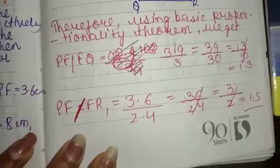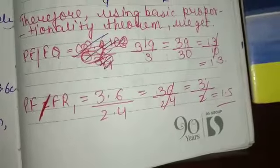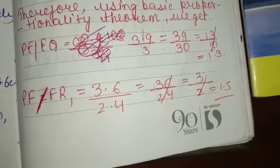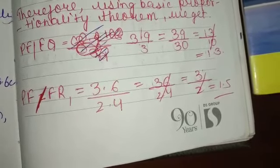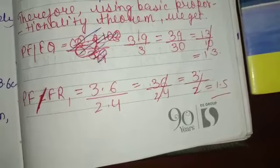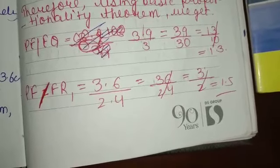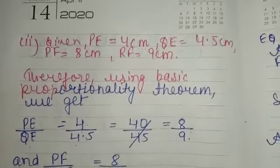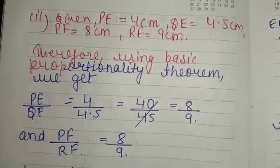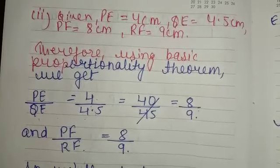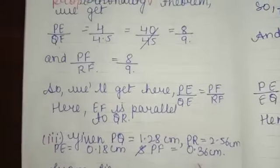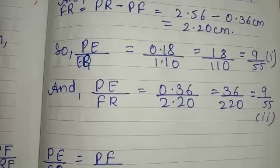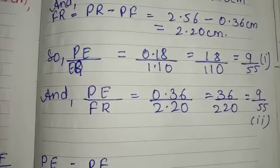Now, the second one is PF by FR. We will solve this same way: 3.6 by 2.4. It will be 36 by 24, which is 3 by 2, then it will be 1.5. The third one will be 8.8 by 9. After that, we will find out. In the first one, we will find out how much came out.